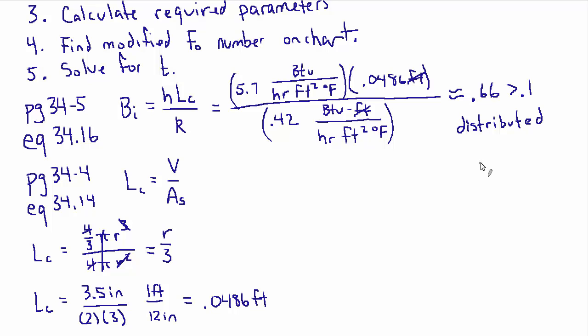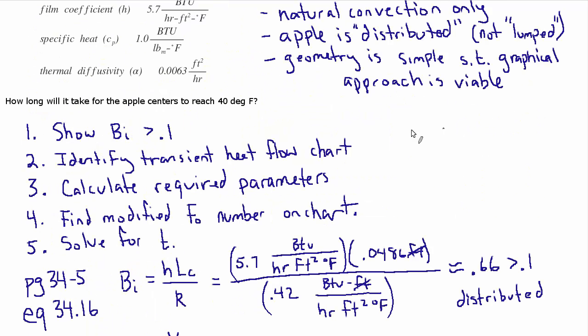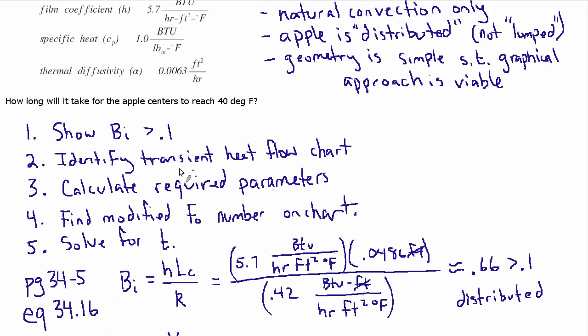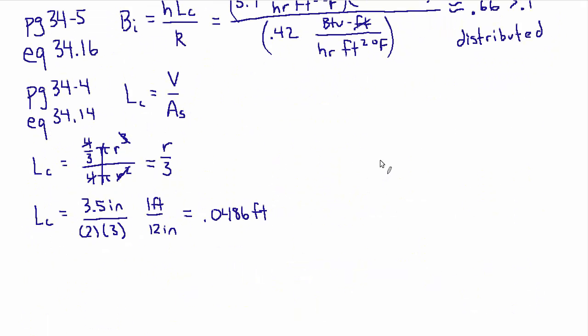The last assumption that we made was that the geometry is simple enough such that a graphical approach is viable. So that's the next thing that we're going to do in step two is identify the transient heat flow chart that we're going to use to solve this problem.